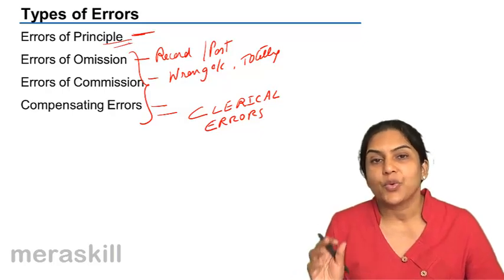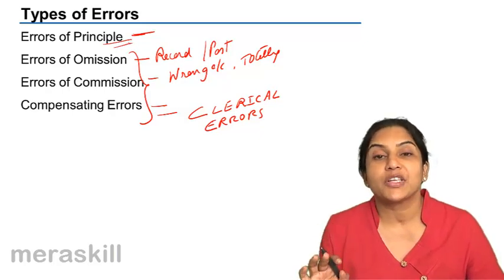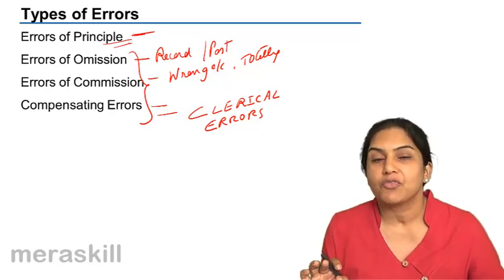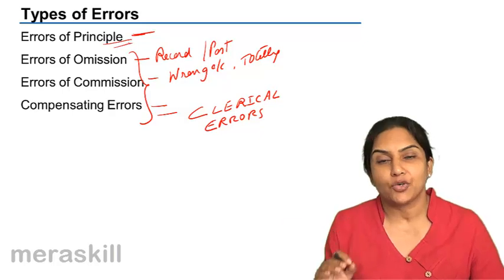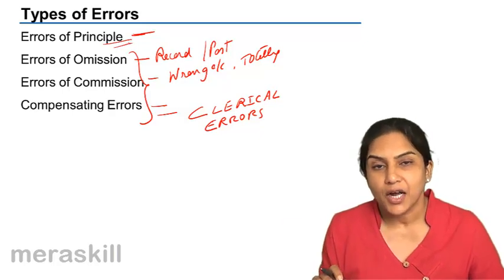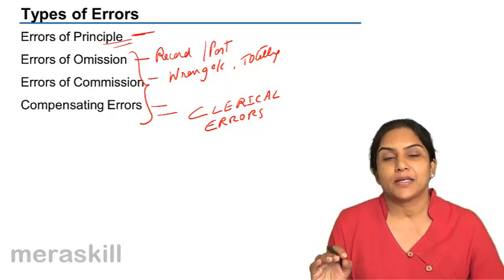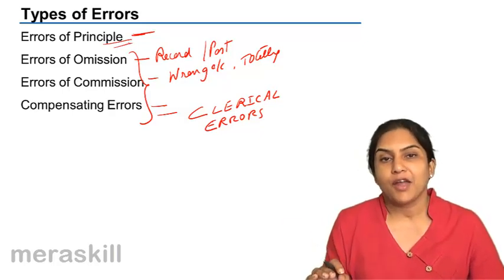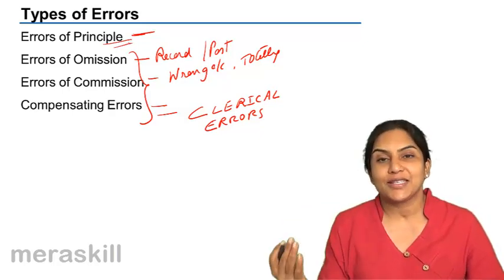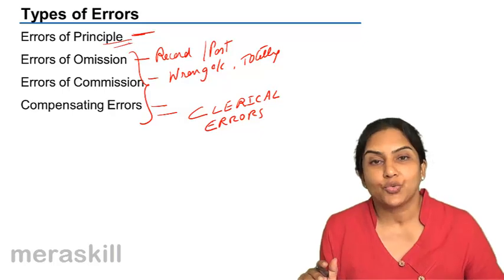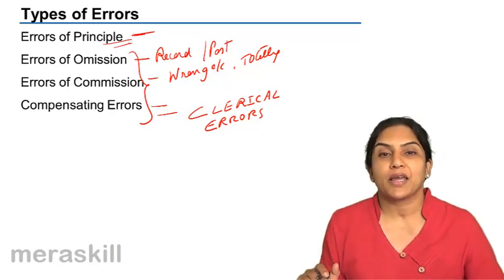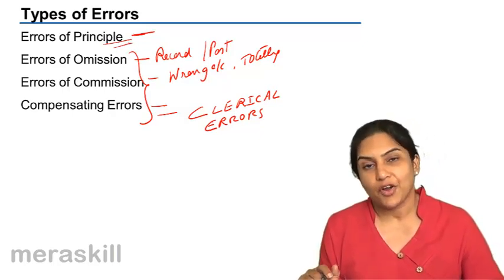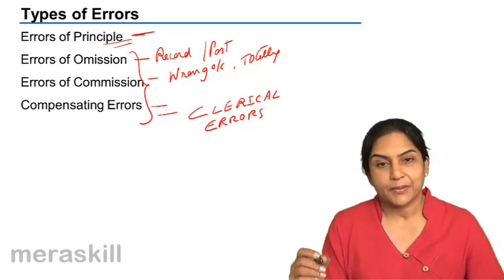For example, wages paid for installation of machinery should be debited to the machinery account. But if somebody has instead taken it to the wages account, it would be a case of an error of principle.